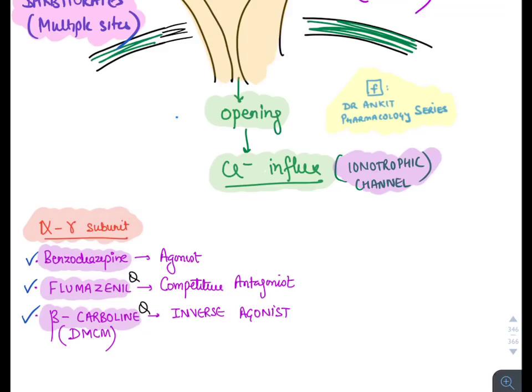Flumazenil is a competitive antagonist and is the antidote for benzodiazepine poisoning. Beta-carboline, also known as DMCM, is an inverse agonist at the alpha-gamma subunit — it is not used clinically.